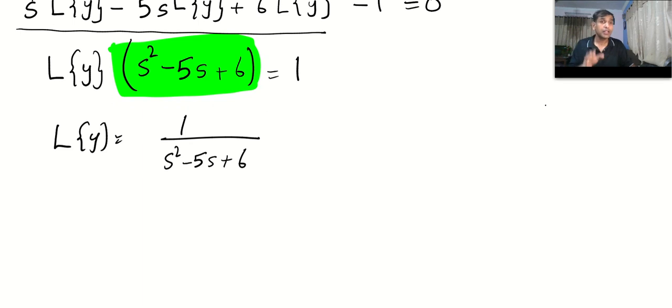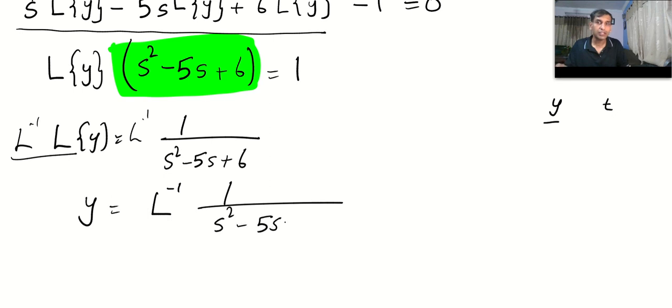Solving a differential equation means finding the value of y in terms of the given variable. Here the second variable is not given so I assume t. I will write my solution y in terms of t. Now take Laplace inverse on both sides. The left side will be y and the right side will be L⁻¹{1/(s² - 5s + 6)}.